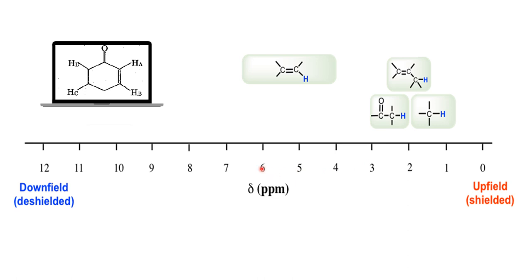Now let us see the spectrum. There are four protons given here. The first proton is the alkyl proton, which is a shielded proton because the surrounding groups are shielding it — the electrons are not withdrawn. As a result, the proton is shielded from the external magnetic field and the value appears between 1 and 2 ppm.